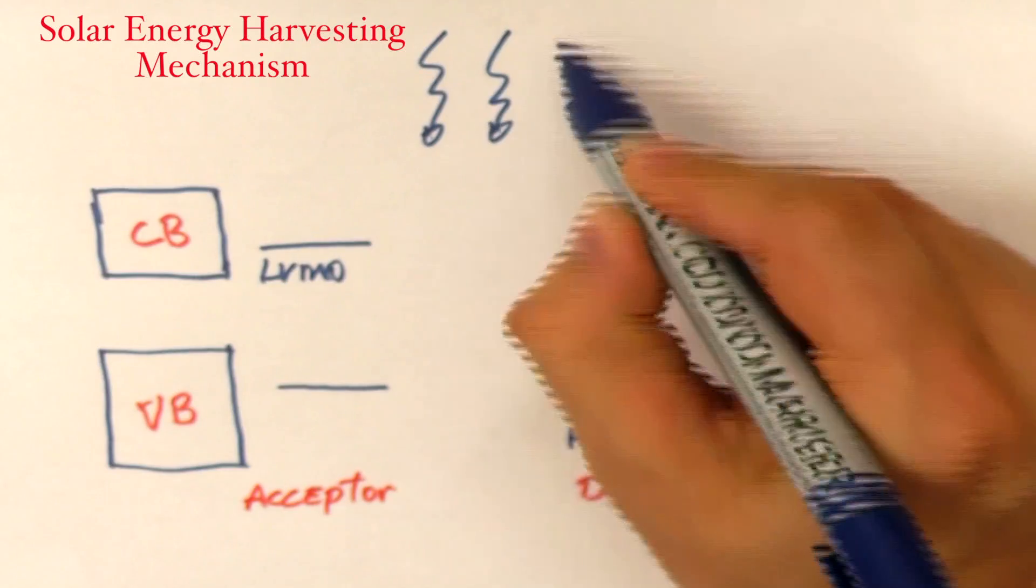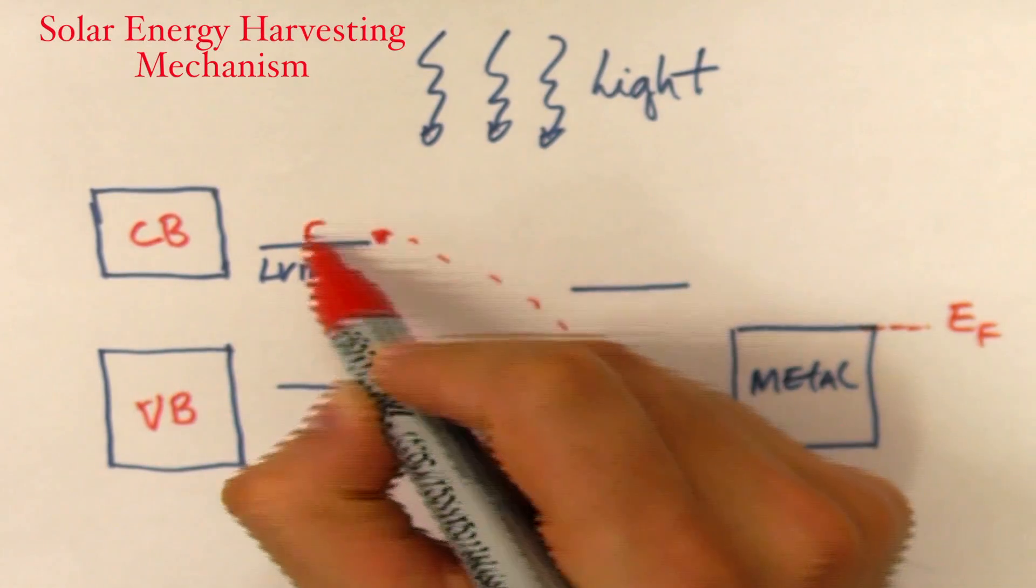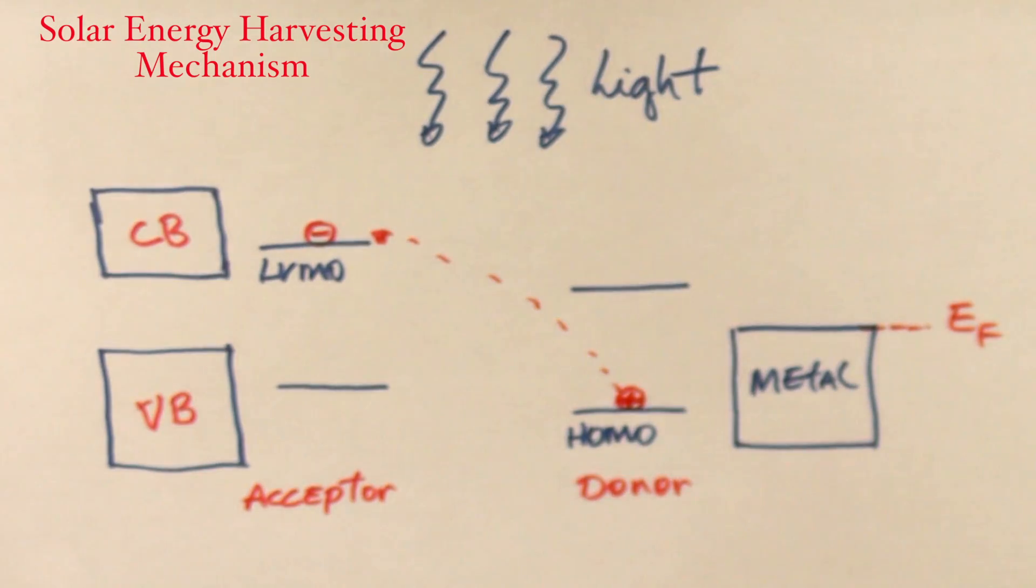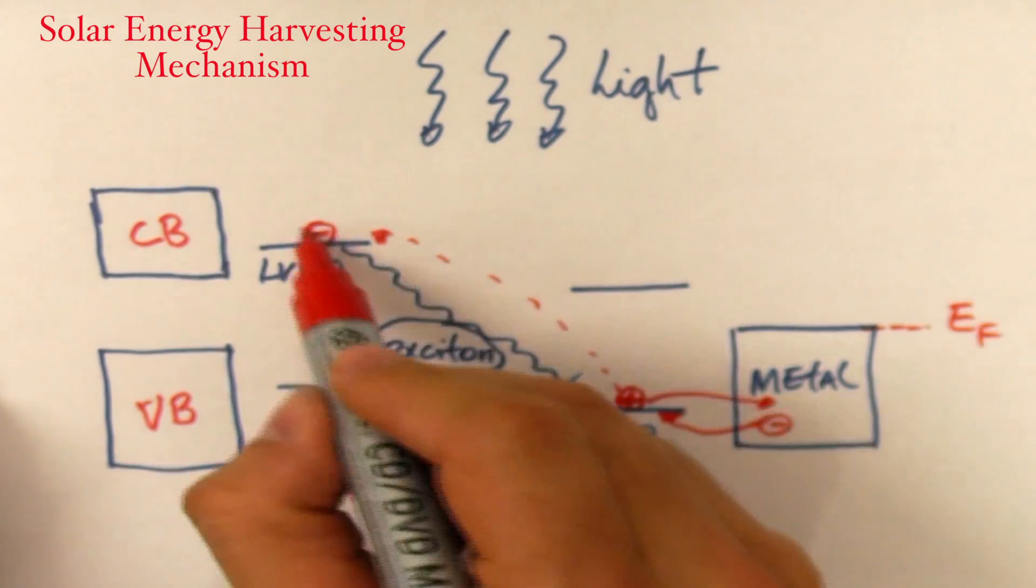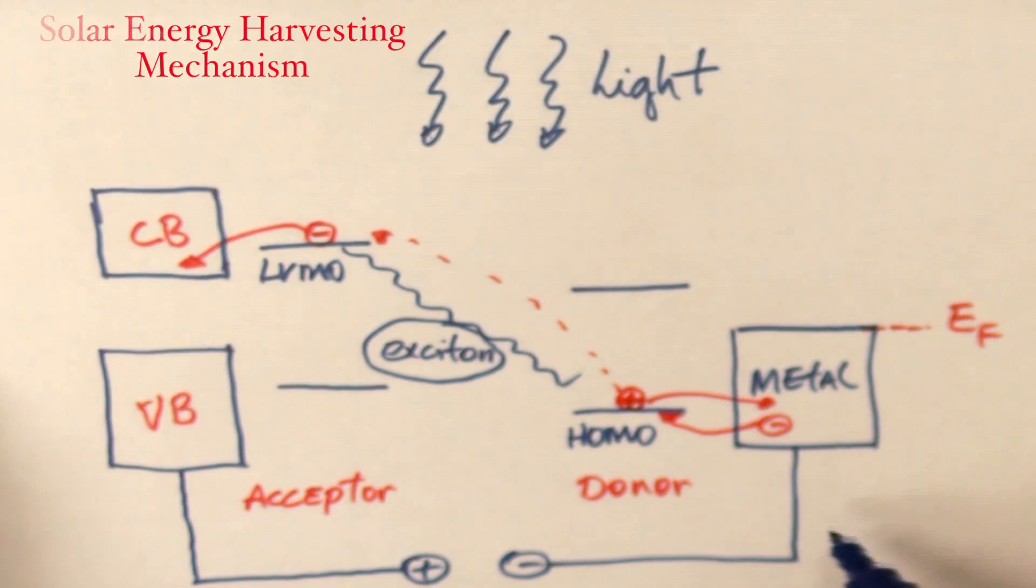When the light hits the system, an electron on the HOMO of the donor absorbs energy and jumps to the LUMO of the acceptor, creating a pair electron-hole, known as exciton. The electron and the positive charge left behind are injected into the electrodes, generating electrical current.